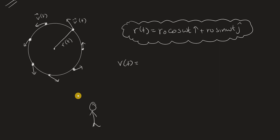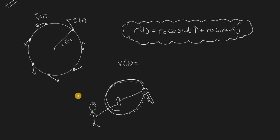To understand why it's tangential, consider this analogy: imagine you have a string attached to a key and you're spinning it in a circle. The speed remains constant as you keep spinning. Now, what if you let it go? The key flies off tangentially — in whatever direction it was heading at that last moment.